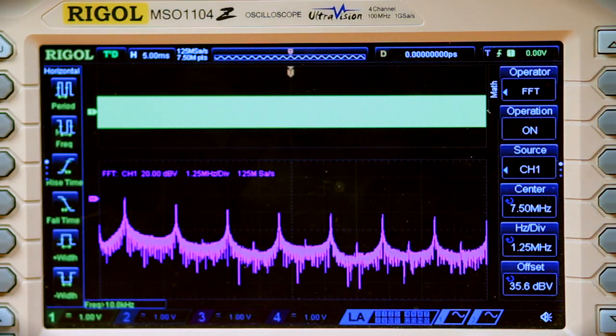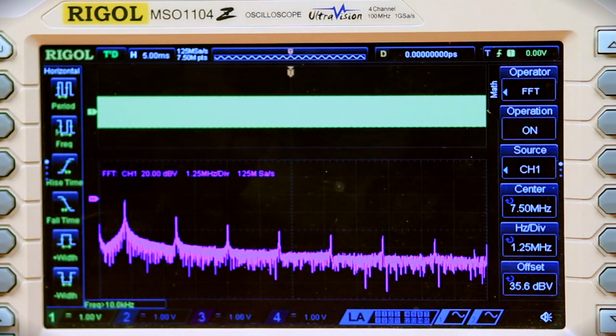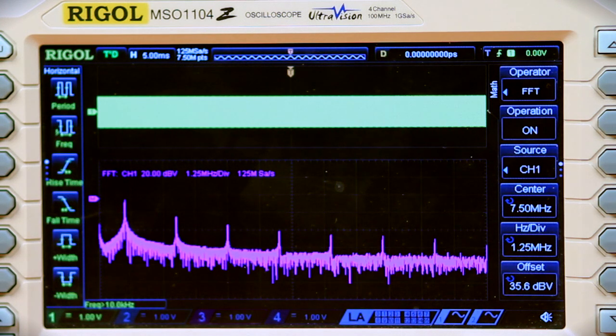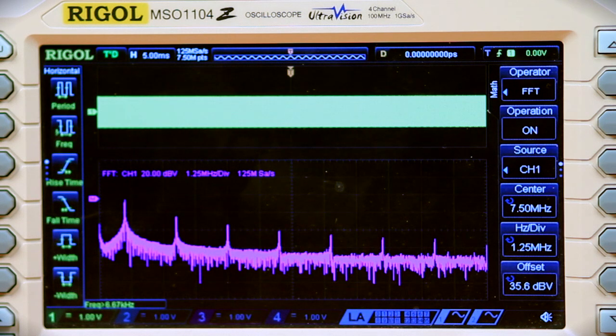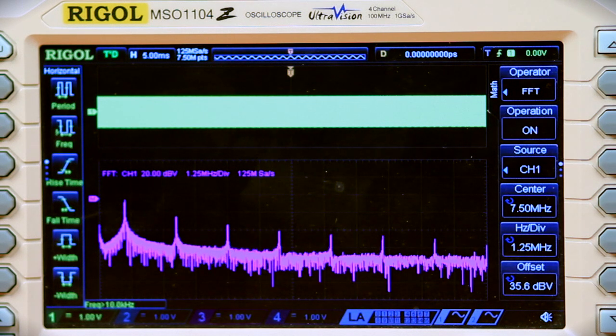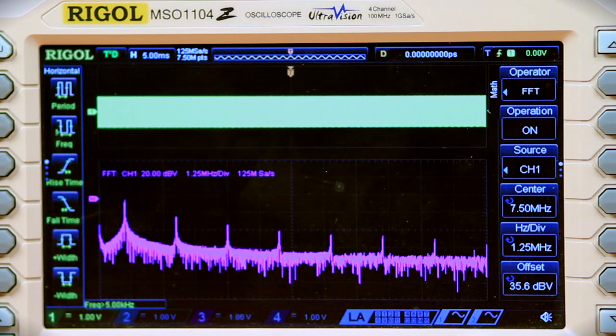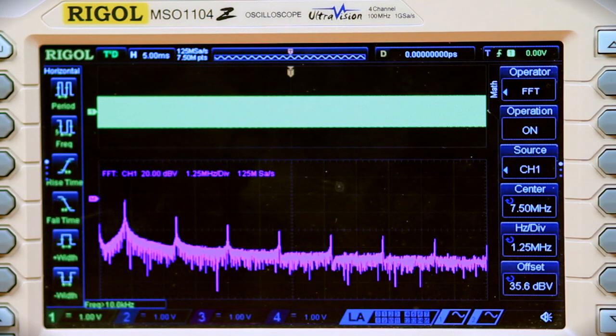A third signal we're going to look at today is the ramp. Mathematically we know that a ramp signal should fall off more quickly than a square wave, but you should still be able to see the odd harmonics. And again, we can see that capability here.